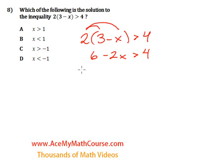Now, what shall we do? We can just subtract the 6 from both sides of the inequality. 6 minus 6 is 0. We can bring down a negative 2x. And that's greater than 4 minus 6, which is negative 2.